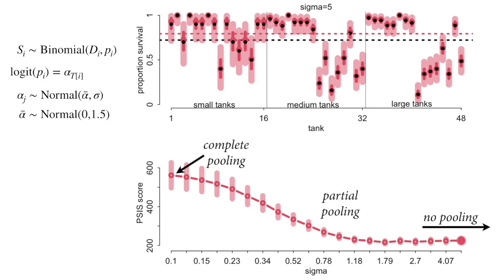For very small sigma values — the left of the graph — we call this complete pooling. If we fix sigma at a very small value, that's like assuming all the different units in the data, all the tadpole tanks, are the same. If we see data for any one of them, we update our estimates for all tanks using that same information. Information about any one tank tells us about all of them; the population is represented by one number, essentially the overall mean.